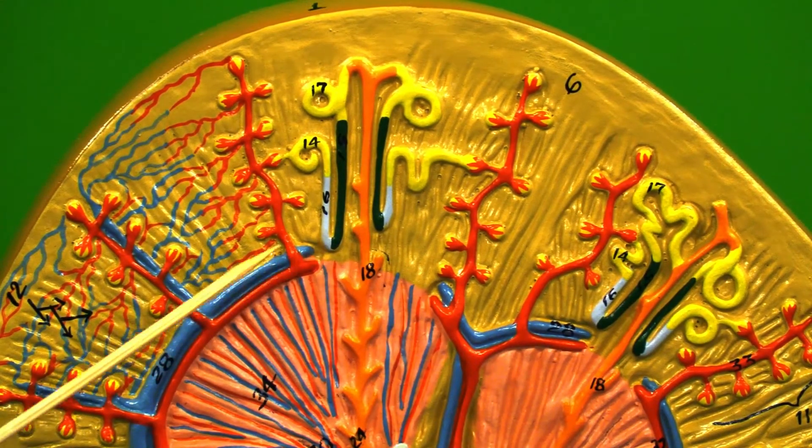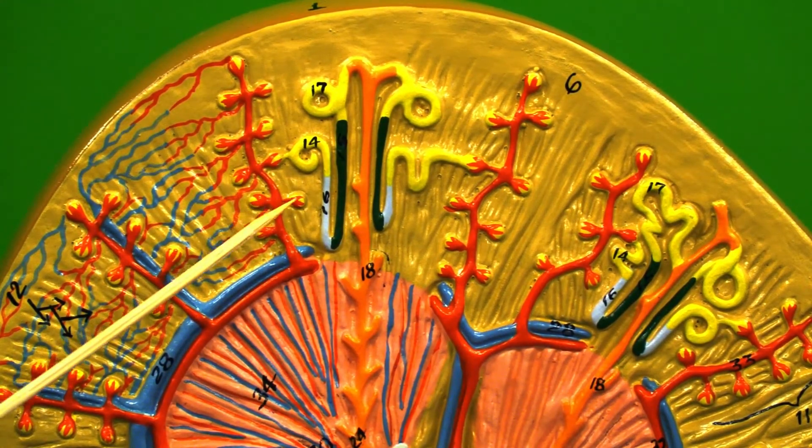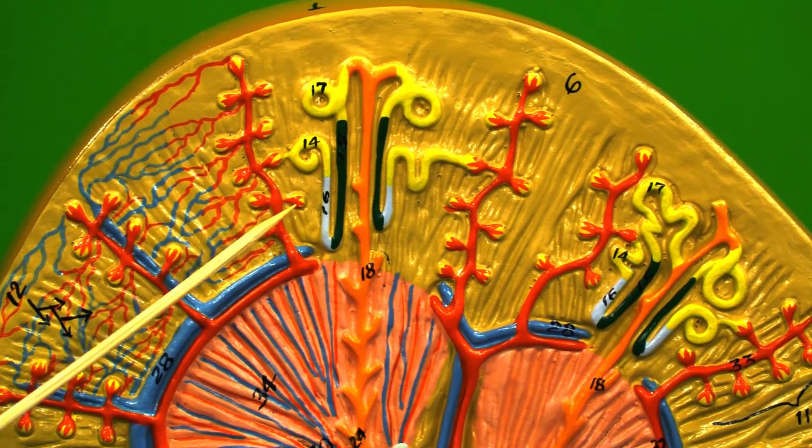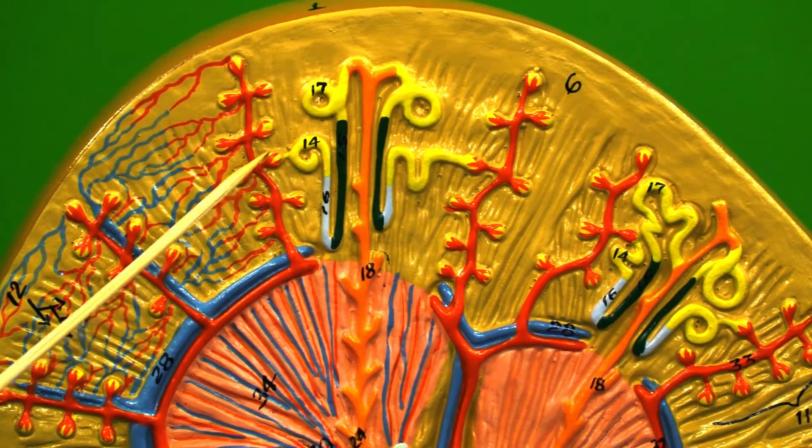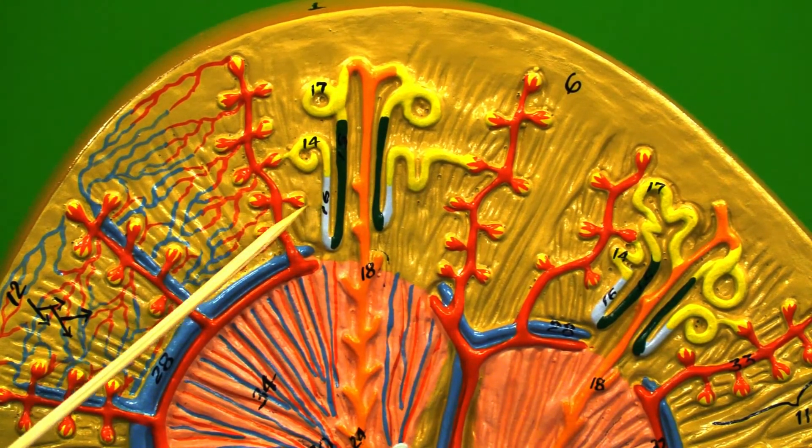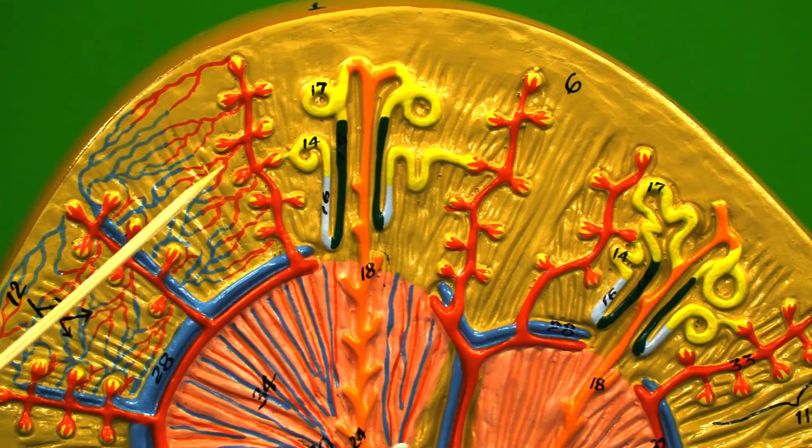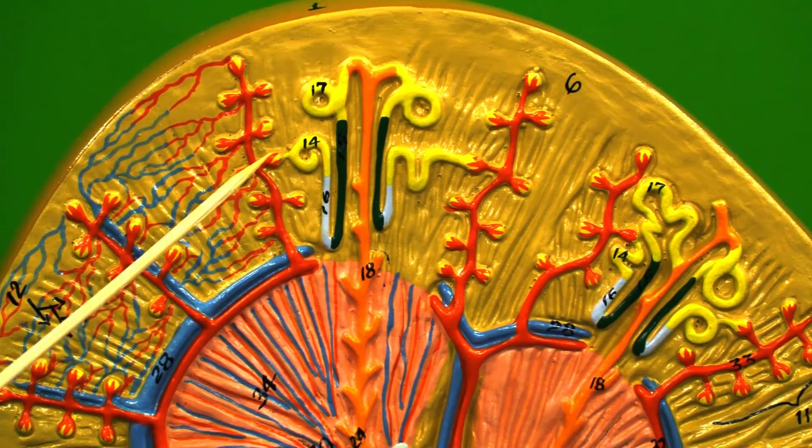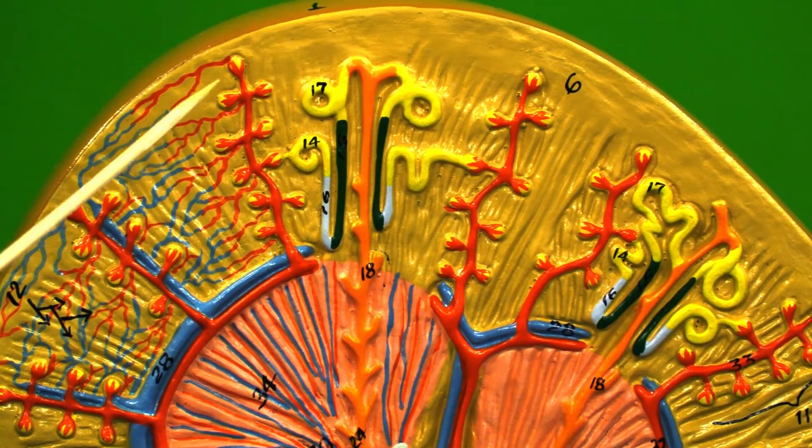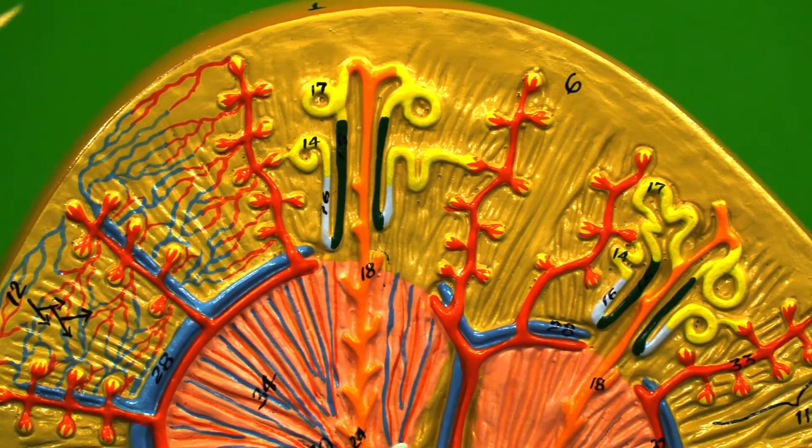We start by having blood flow into a very small capillary bed known as the glomerulus shown in red. The yellow around the glomerulus is the Bowman's capsule. That's the first part of the nephron. Together the glomerulus and the Bowman's capsule makes a structure called the renal corpuscle.